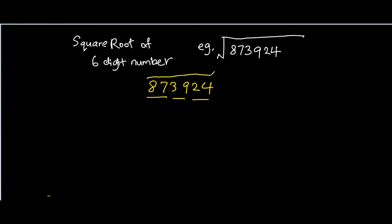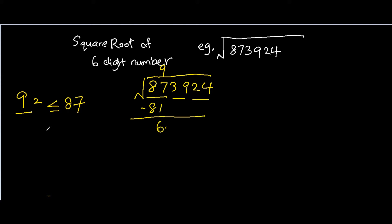We do the square root first. We focus on the first 2-digit number. A digit squared must be smaller than or equal to 87. We know that 9 squared equals 81, which is smaller than or equal to 87. So this digit is 9, and the square is 81, giving a remainder of 6. The next step is to bring down the pair 39.